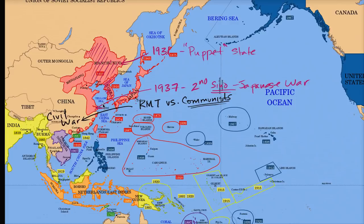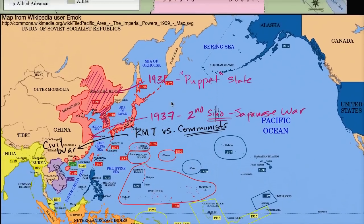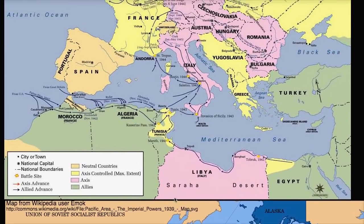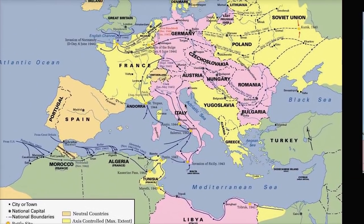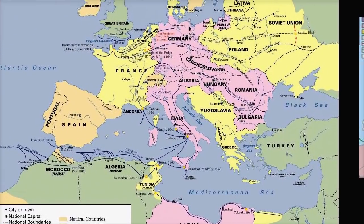That lays a foundation for what's happening in the Pacific in the run-up to World War II. Now let's look at what's happening in Europe. As we go through the 1930s, Hitler's Germany — the Nazi Party — is getting more and more militaristic. They're allied with Benito Mussolini's Italy. They're both extremely nationalistic and both do not like the Communists at all.